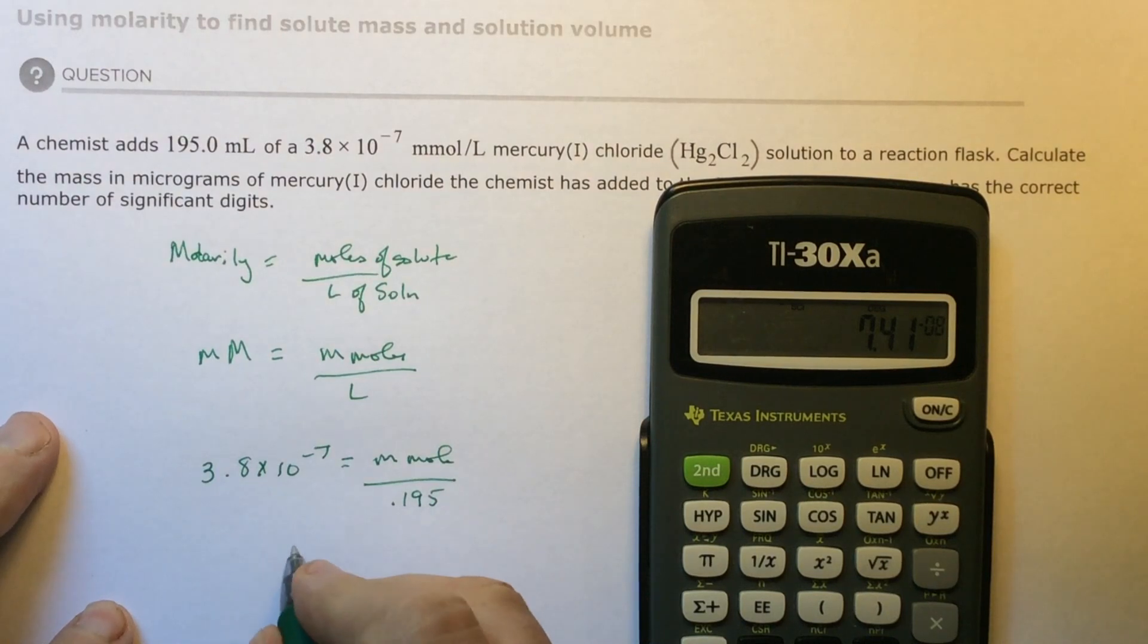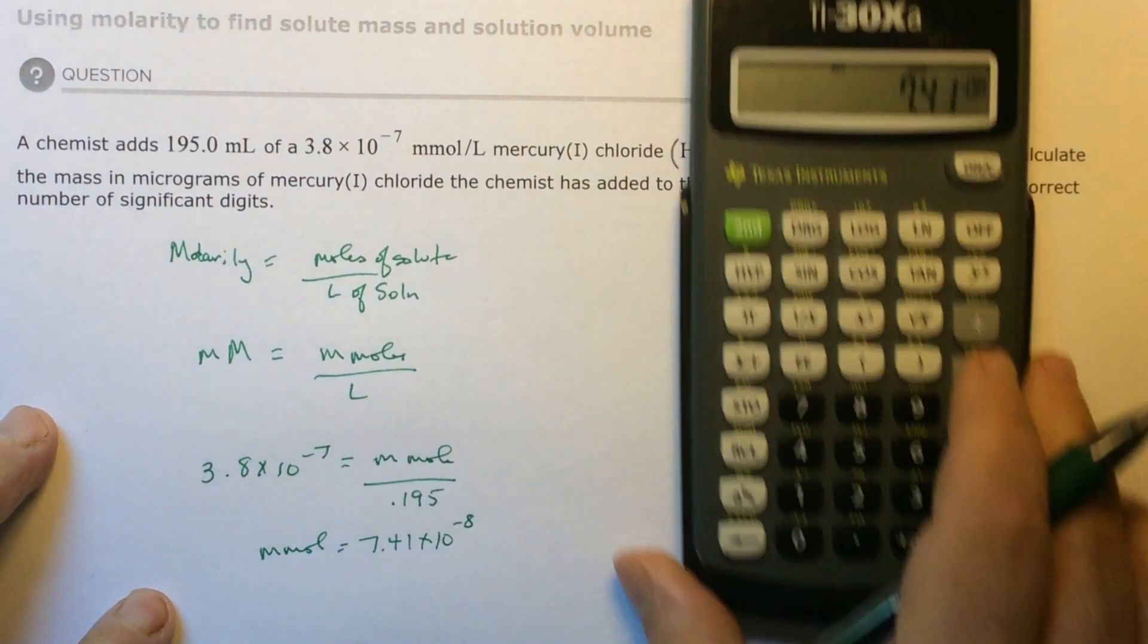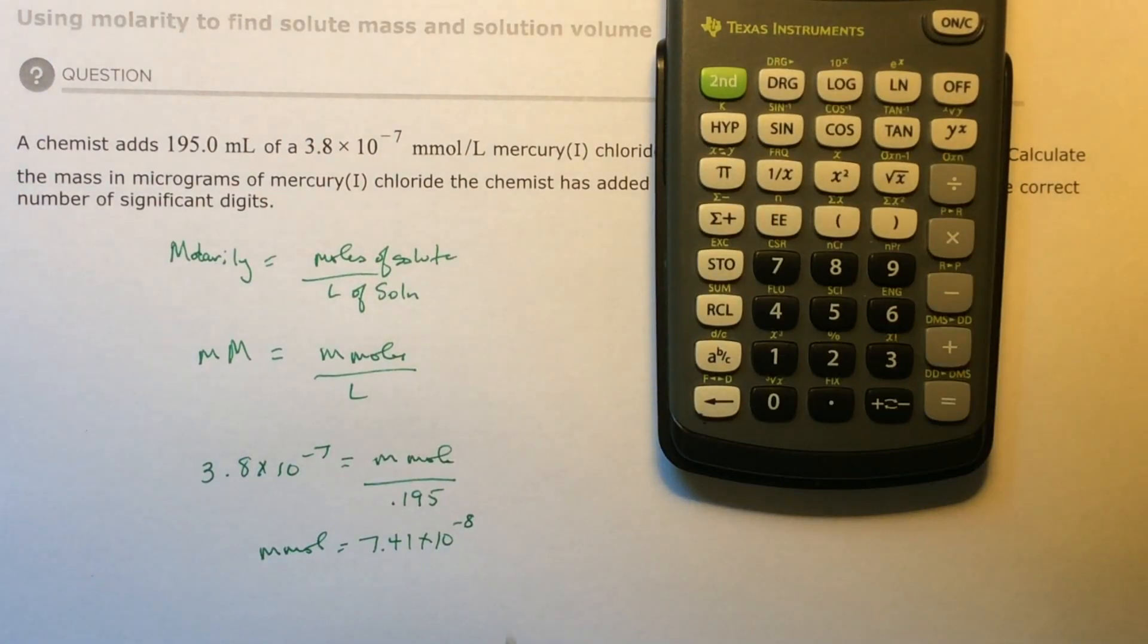That's going to give you micromoles equals 7.41 times 10 to the minus 8. So if that's micromoles, millimoles, I'm sorry, millimoles.